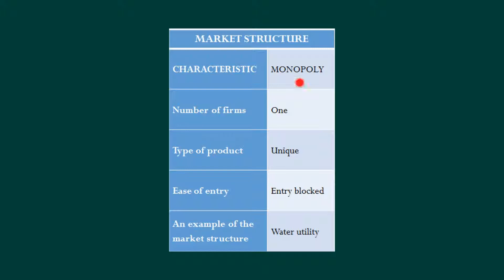The significance of being the only firm: when we looked at perfect competition we had a firm demand curve and a market demand curve. If you are the only one, then your firm demand curve is the market demand curve and vice versa. The market demand curve is the firm demand curve. The unique product is obvious because if you're one firm you're the only one that can make it — the product is by definition unique.